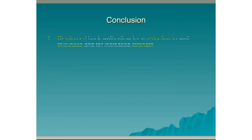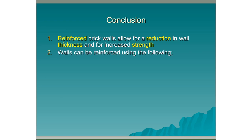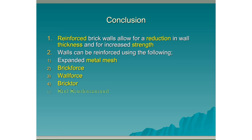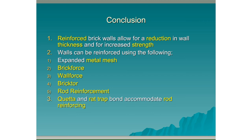Conclusion: Reinforced brick walls allow for a reduction in wall thickness and for increased strength. Common reinforcement types include Brick Tor and rod reinforcement. Queta bond and rat-trap bond are the two bonds that accommodate rod reinforcement.